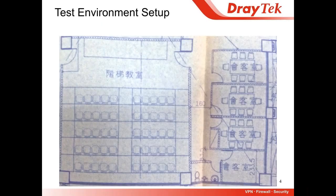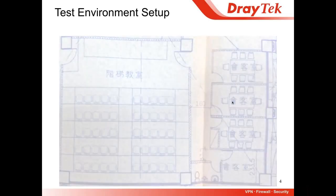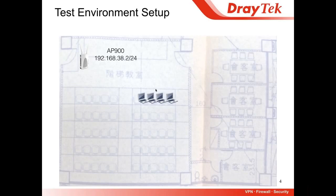This is the blueprint of our test environment — a big meeting room in Joyetech, with four other meeting rooms. We put the AP900 right at one corner, and it has an IP address in the 38 subnet. Then we put four laptops with IP addresses from 38.110 to 38.140, and another three laptops with IP addresses from 150 to 170.